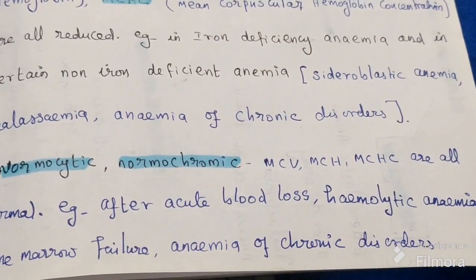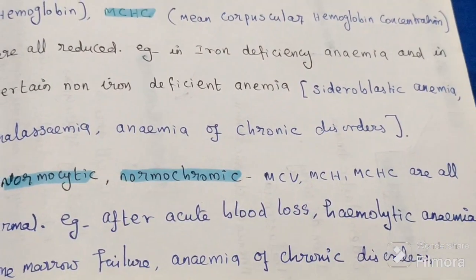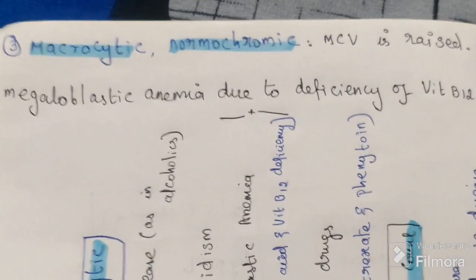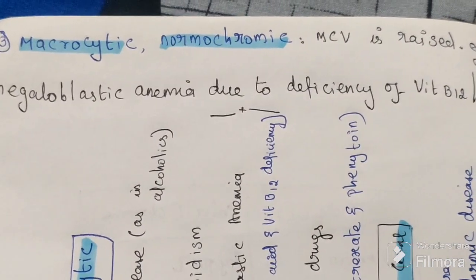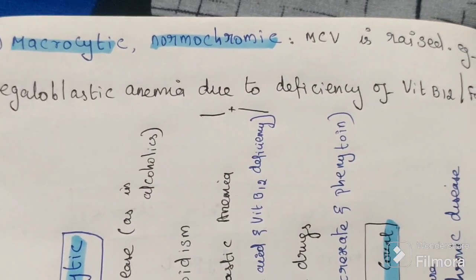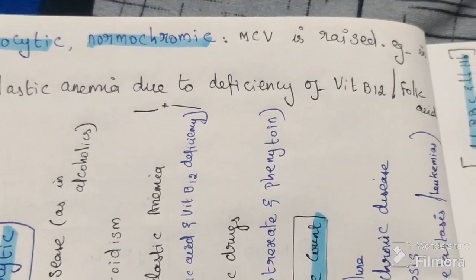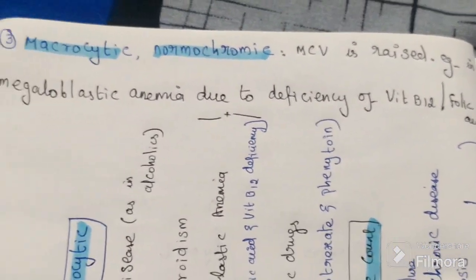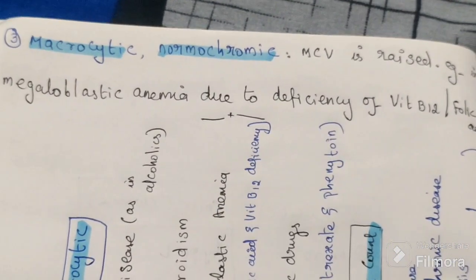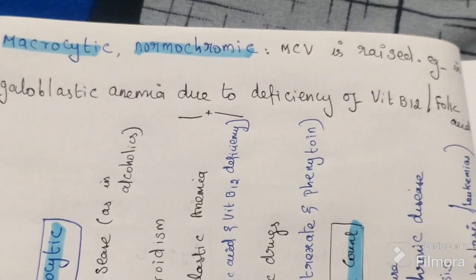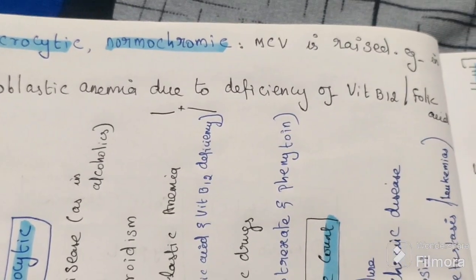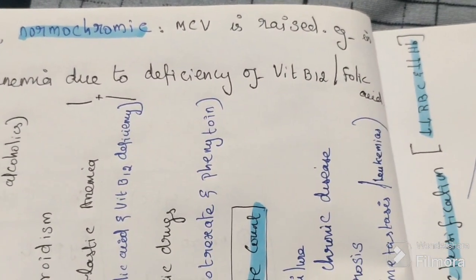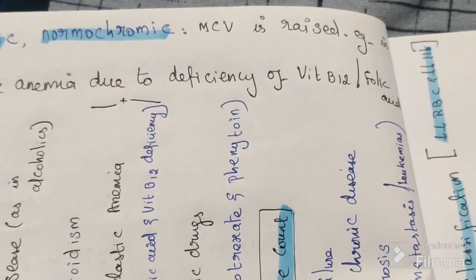In macrocytic anemia, MCV is raised. An example is megaloblastic anemia, which is due to deficiency of vitamin B12 or folic acid.